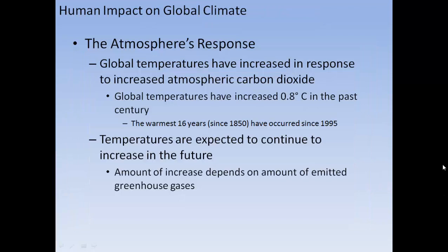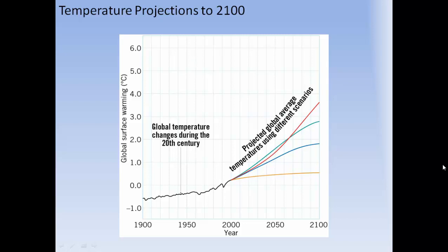Global temperatures have increased in response to increased atmospheric carbon dioxide — about 0.8 degrees Celsius in the past century. The 16 warmest years since 1850 have occurred since 1995. Temperatures are expected to continue to increase, and the amount of increase depends on the amount of emitted greenhouse gases. Temperature projections to the year 2100 show different models predicting varying curves of the rate of global temperature increase.